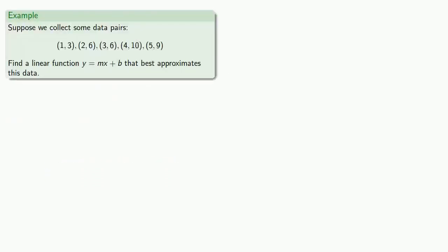So let's try it out. Suppose we collect some data pairs. And we want to find a linear function y equals mx plus b that best approximates this data. So our input values are going to be 1, 2, 3, 4, and 5. And our corresponding observed output values are going to be 3, 6, 6, 10, and 9.